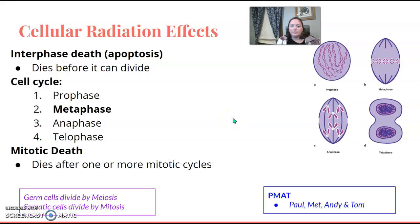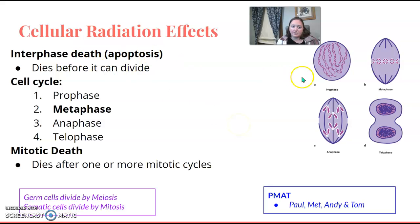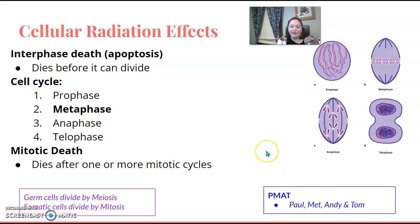Here are your cell cycle phases. I would know these in order — the mnemonic is PMAT: prophase, metaphase, anaphase, telophase. Interphase death, or apoptosis, is when the cell dies before it can divide, usually within the metaphase cycle. Mitotic death is when it dies after one or more cycles. Terminology to remember: germ cells divide by meiosis, while somatic cells divide by mitosis. Knowing the order of these phases is something I would definitely suggest.